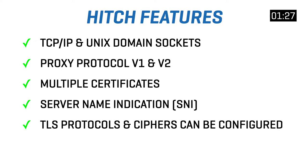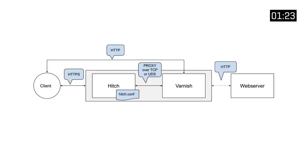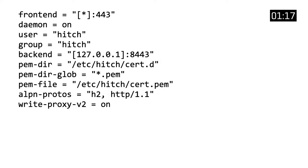TLS protocols and cipher settings can be configured and Hitch also supports OCSP stapling. When connecting Hitch to Varnish, a certain amount of parameters need to be configured and that can be done in the hitch.conf file. Here's a typical example configuration — not all settings are there because most of the default values are fine.